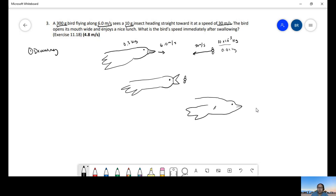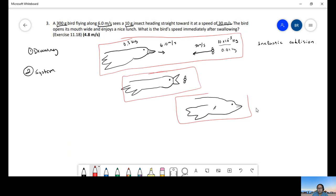This is what we're going to call an inelastic collision. So for the inelastic collision, we're going to identify the system. So the system in this problem, I'm going to make it both the bird plus insect.